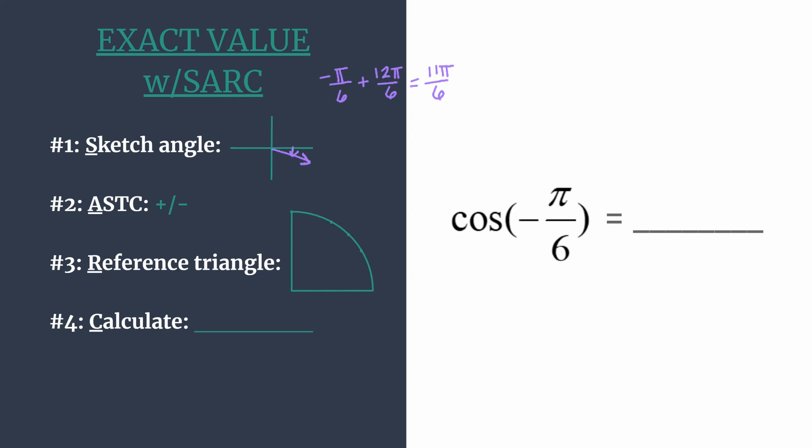We'll use ASTC to determine which trig functions are positive in each quadrant. From quadrant 1, we say A for all. S for sine and cosecant in quadrant 2, so those are positive. T for tangent and its reciprocal cotangent, those are positive in quadrant 3. And C, cosine and secant, which is its reciprocal, are positive in the fourth. So that acronym is just ALL STUDENTS TAKE CLASSES to help us remember this.